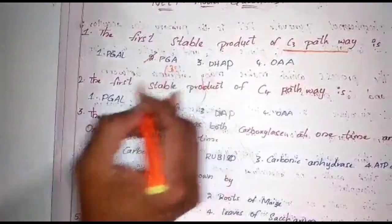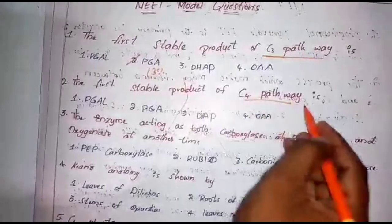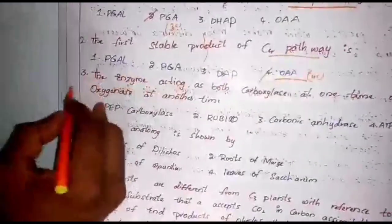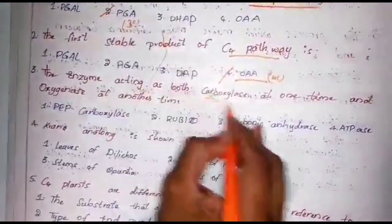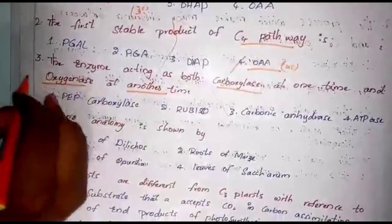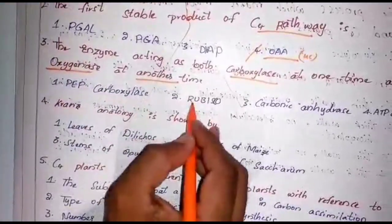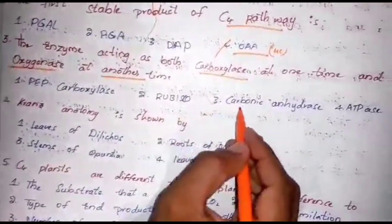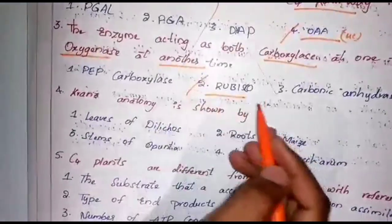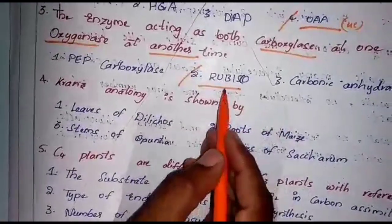The second question: the first stable product of C4 pathway. As we just discussed, in C4 plant species, oxaloacetic acid is the first stable compound, and it consists of four carbons. The third question: the enzyme acting as both carboxylase and oxygenase. This question was asked in the previous NEAT exam. Options: PEP carboxylase, rubisco enzyme, carbonic anhydrase, or ATPase enzyme. Option B — rubisco — is correct, as rubisco is active in the presence of both carbon dioxide and oxygen.